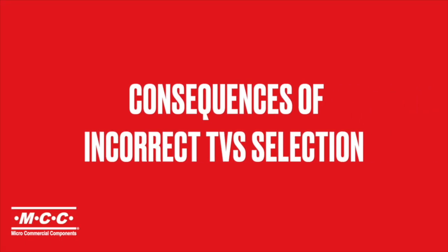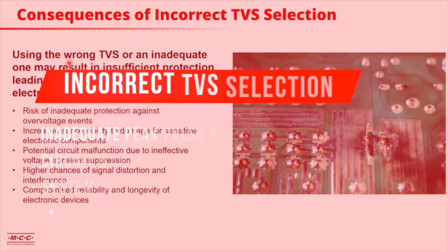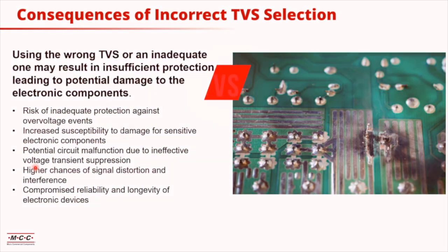TVS operates based on the peak pulse power and the working voltage. If we use the wrong TVS or an inadequate peak pulse power rating, it could suffer from high transient currents. High transient currents could damage circuits, damage electronic components, and excess voltage could further damage the whole system.